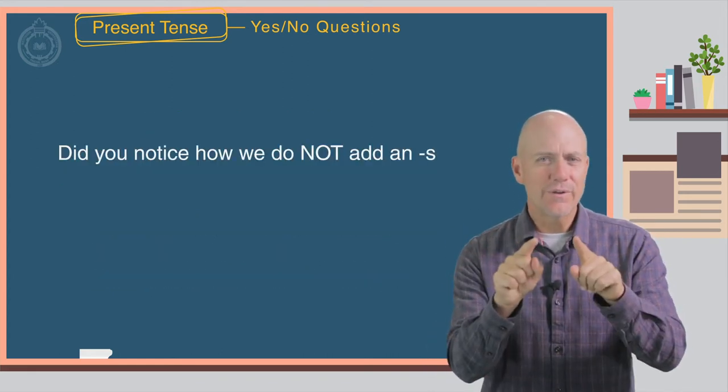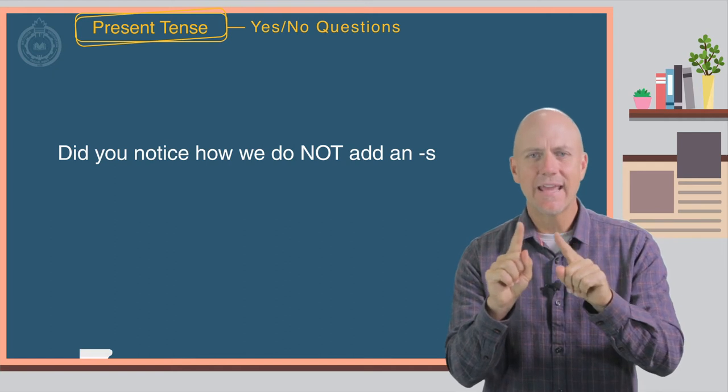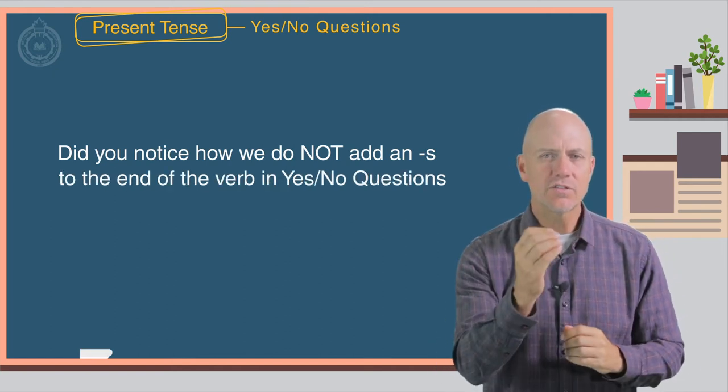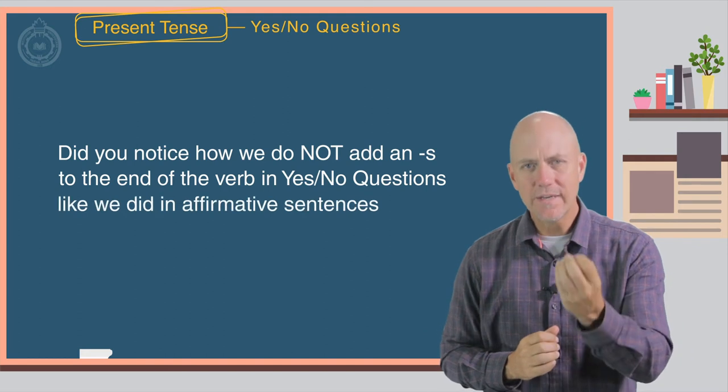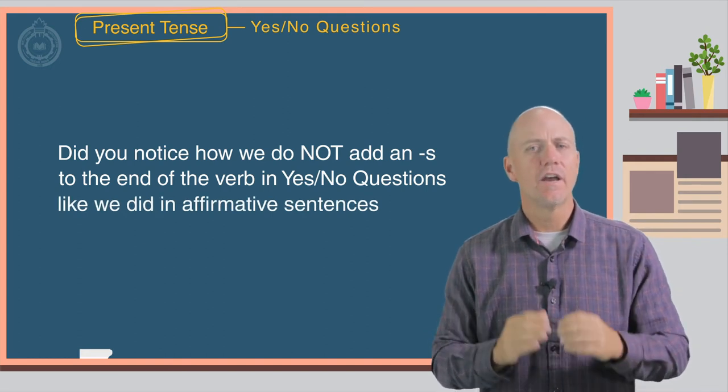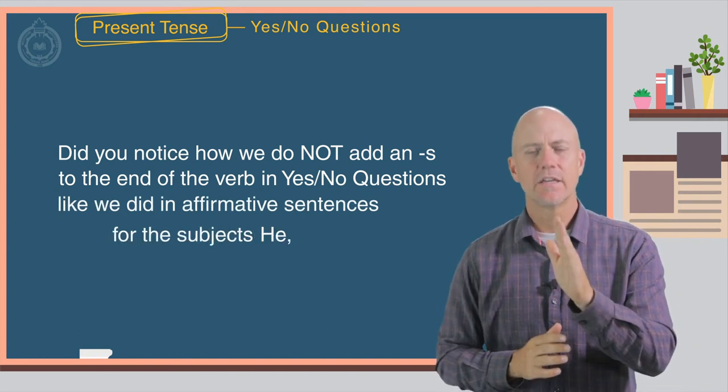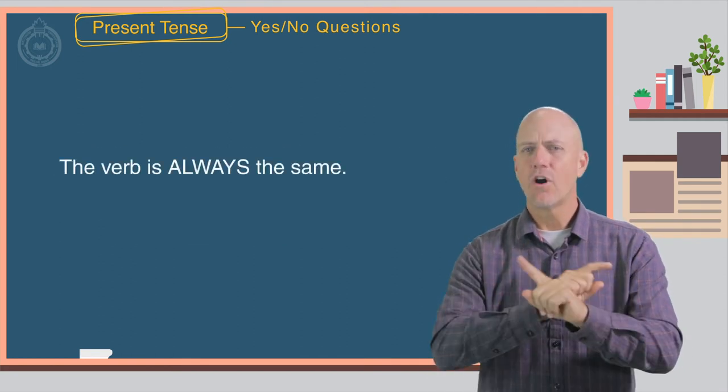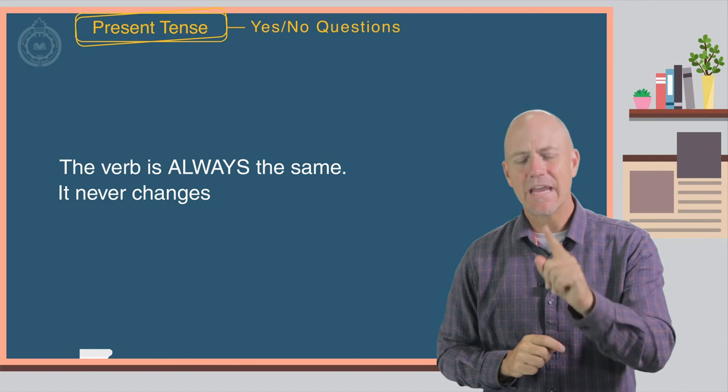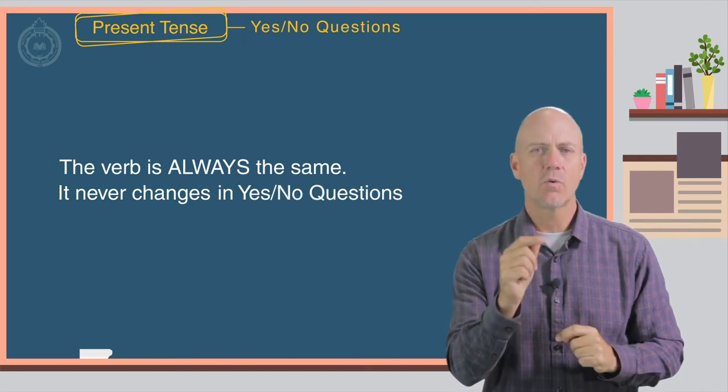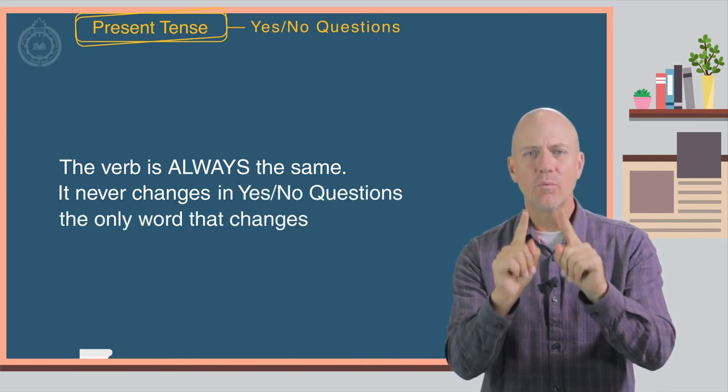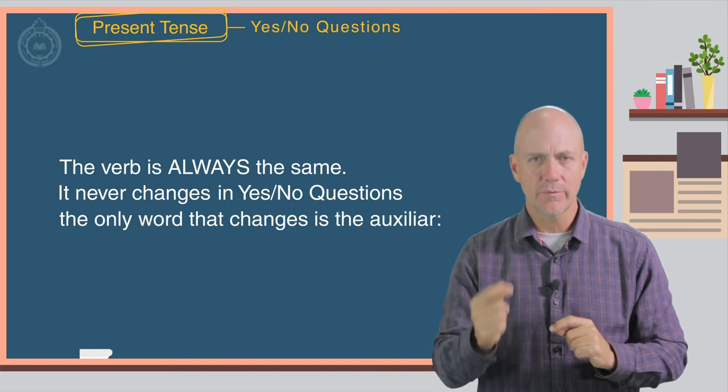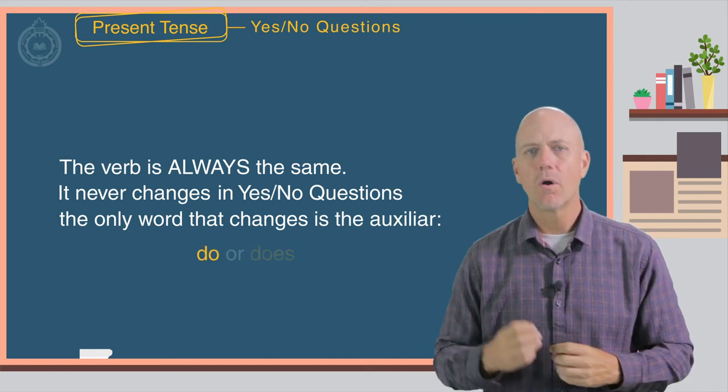Did you notice how we do not add an S to the end of the verb in yes-no questions like we did in affirmative sentences for the subjects he, she, and it? The verb is always the same. It never changes in yes-no questions. The only word that changes is the auxiliary word, do or does.